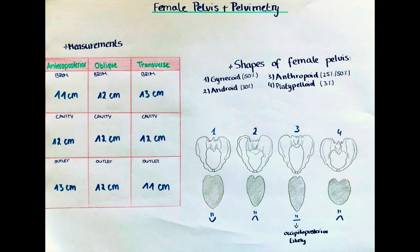The third shape is the android shape, which is found in approximately 30% of women. It is heart or triangular in shape with a narrow diameter and a narrow pubic arch. The last shape is the platypelloid shape, which is only found in around 3% of women. It is a flat and wide oval where the transverse diameter is wide but the anteroposterior diameter is very short.